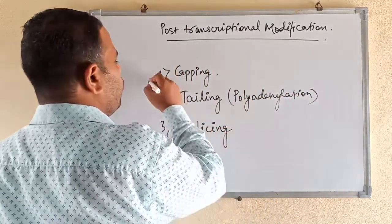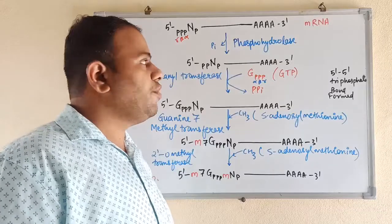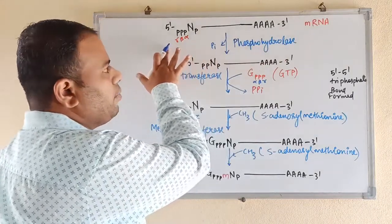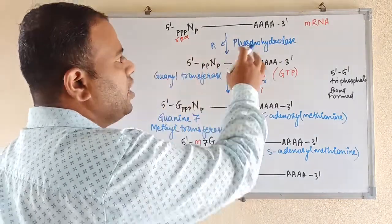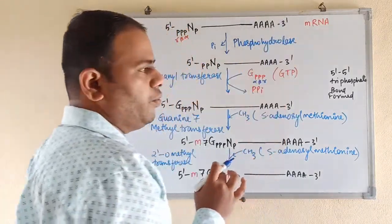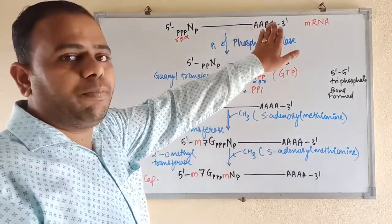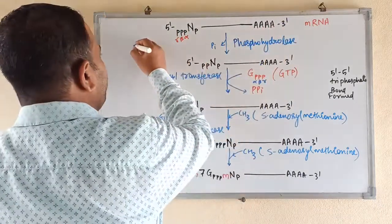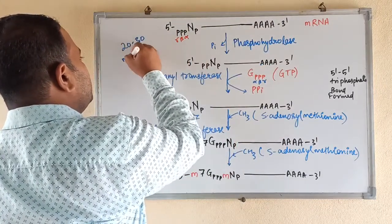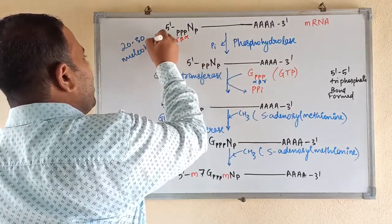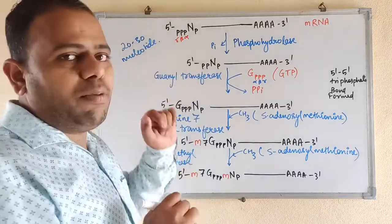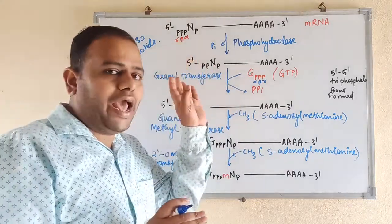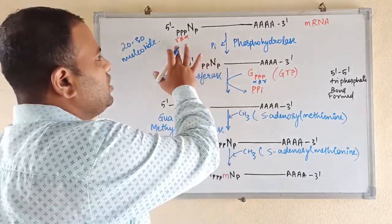Now let us see what is capping and the process of capping in detail. This is the mRNA — you can see this is the 5 prime end of mRNA that is synthesized and this is the 3 prime end of mRNA. The 3 prime end keeps on synthesizing. When 20 to 30 nucleotides of the mRNA are synthesized, the process of capping begins, because the 5 prime end of mRNA has to be protected.